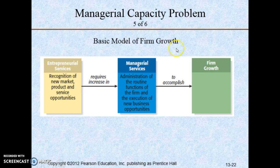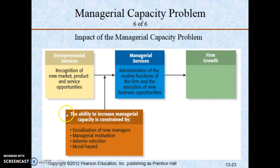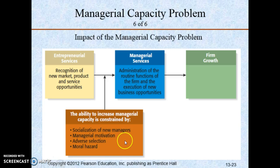The basic model of firm growth starts with entrepreneurial services — recognition of new market, product, and service opportunities — which requires an increase in managerial services: administration of the routine functions of the firm and execution of new business opportunities, all with the goal to accomplish firm growth. Between entrepreneurial and managerial services, the ability to increase managerial capacity is constrained by socialization of new managers, managerial motivation, adverse selection, and moral hazard.